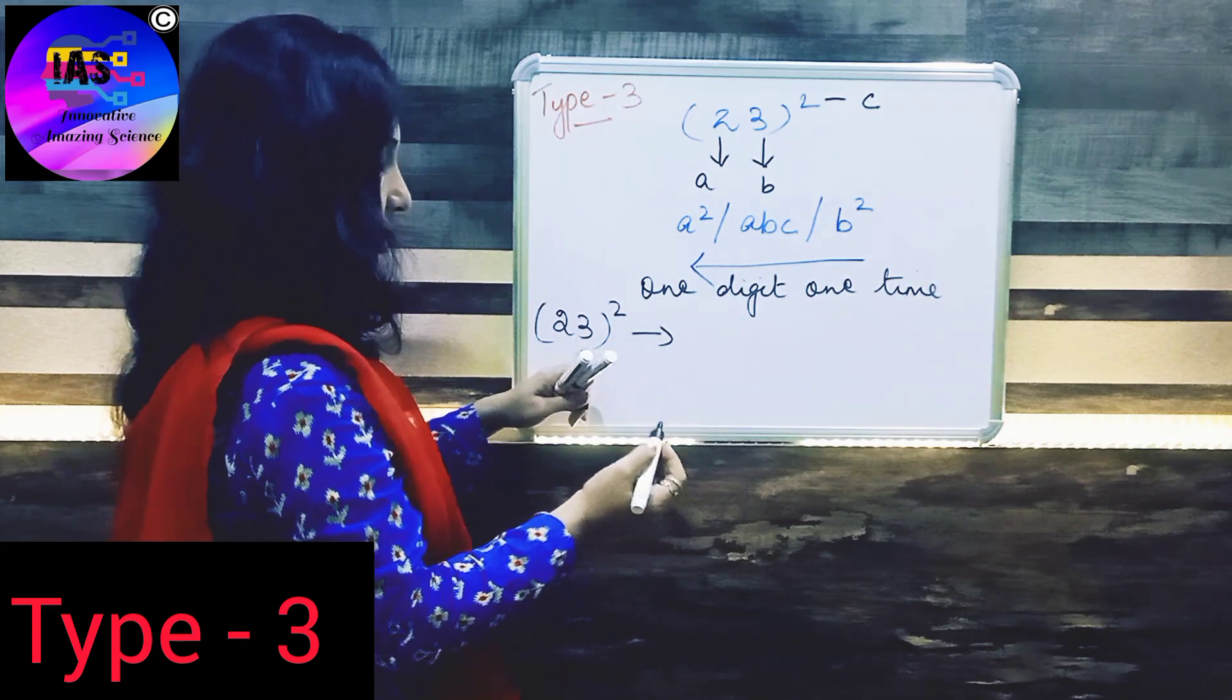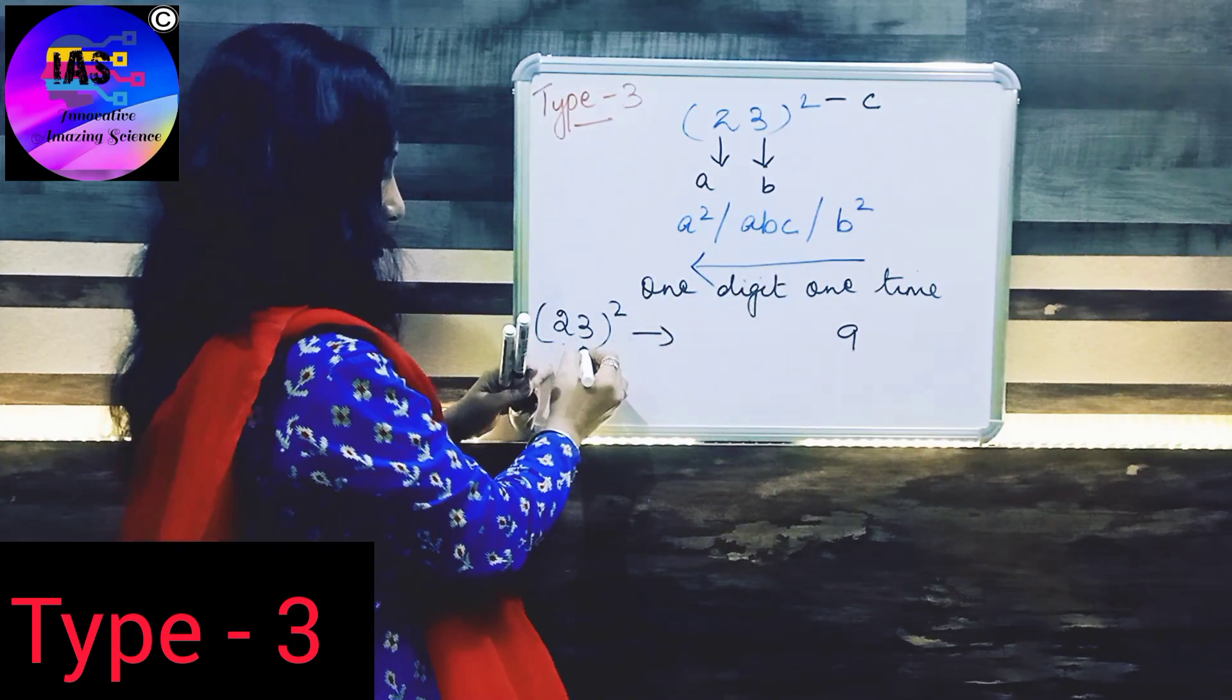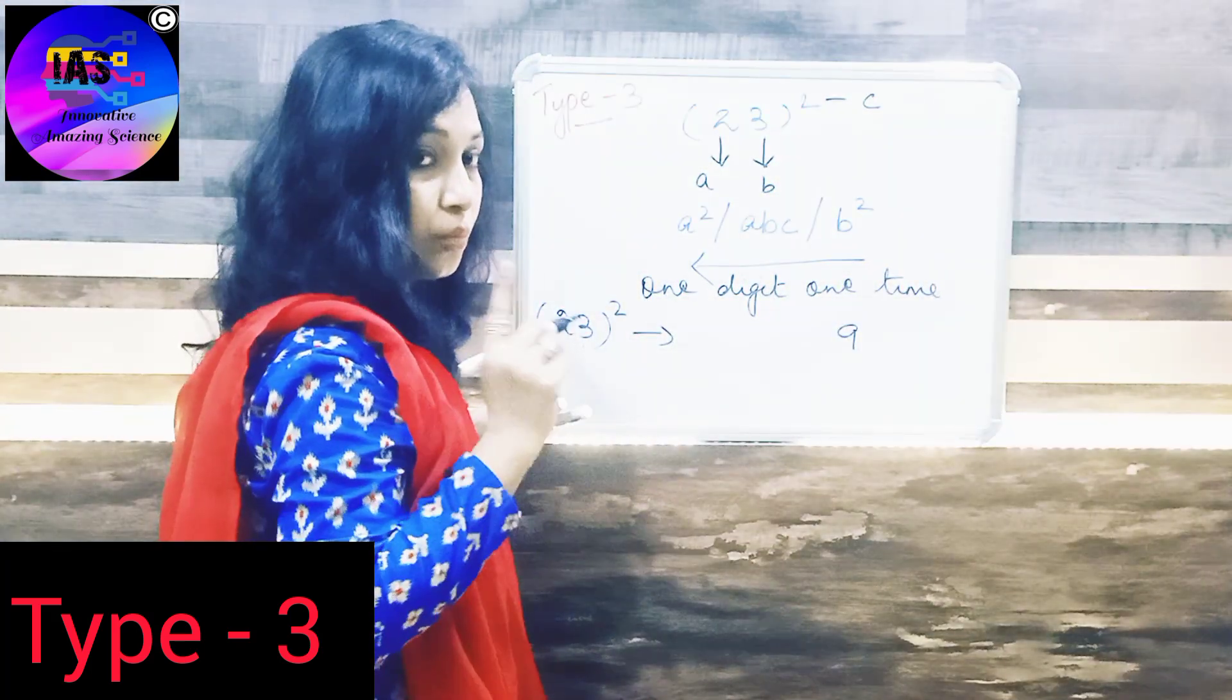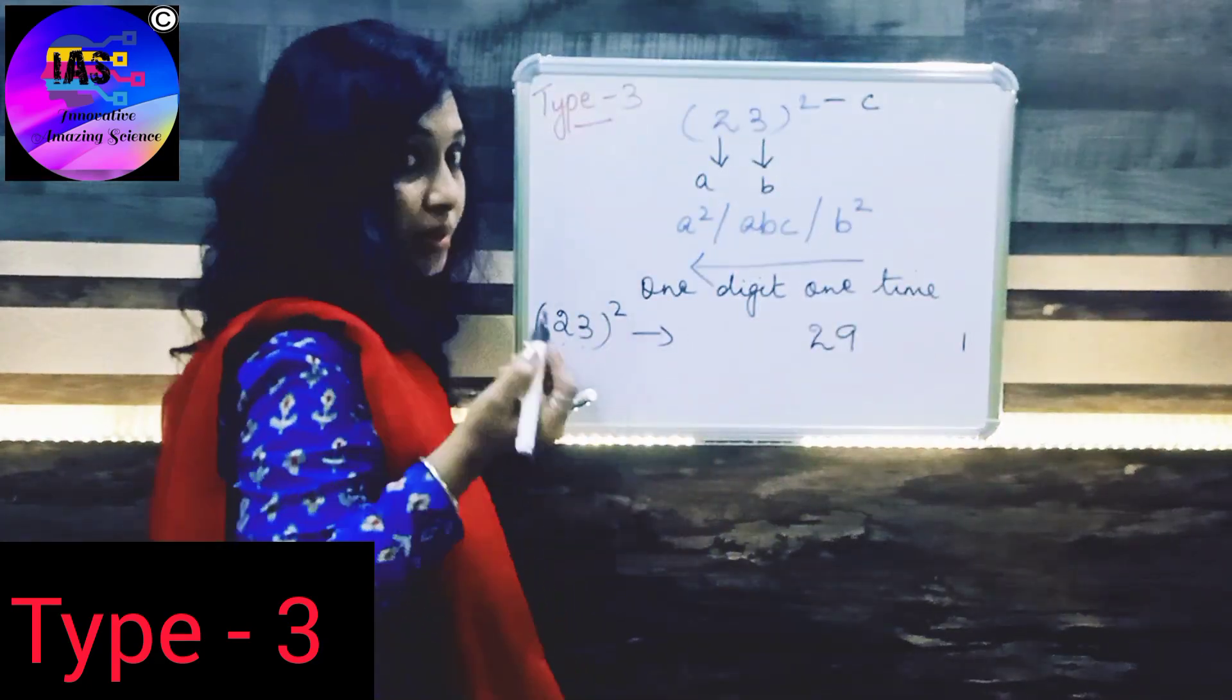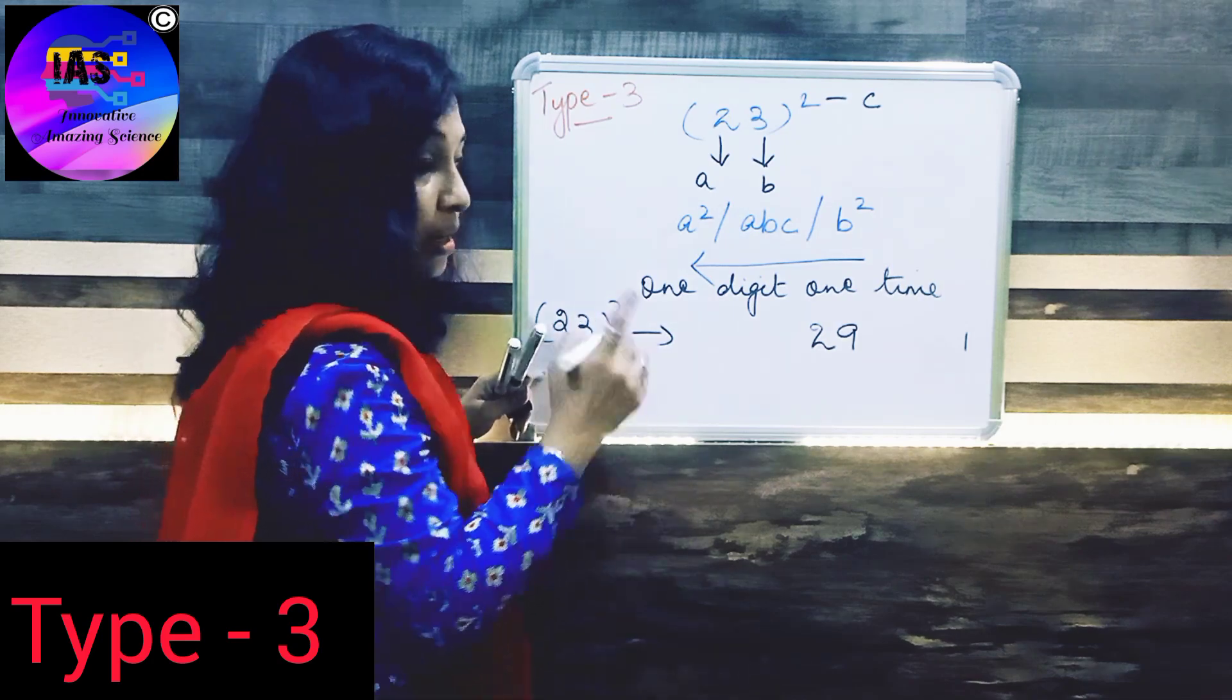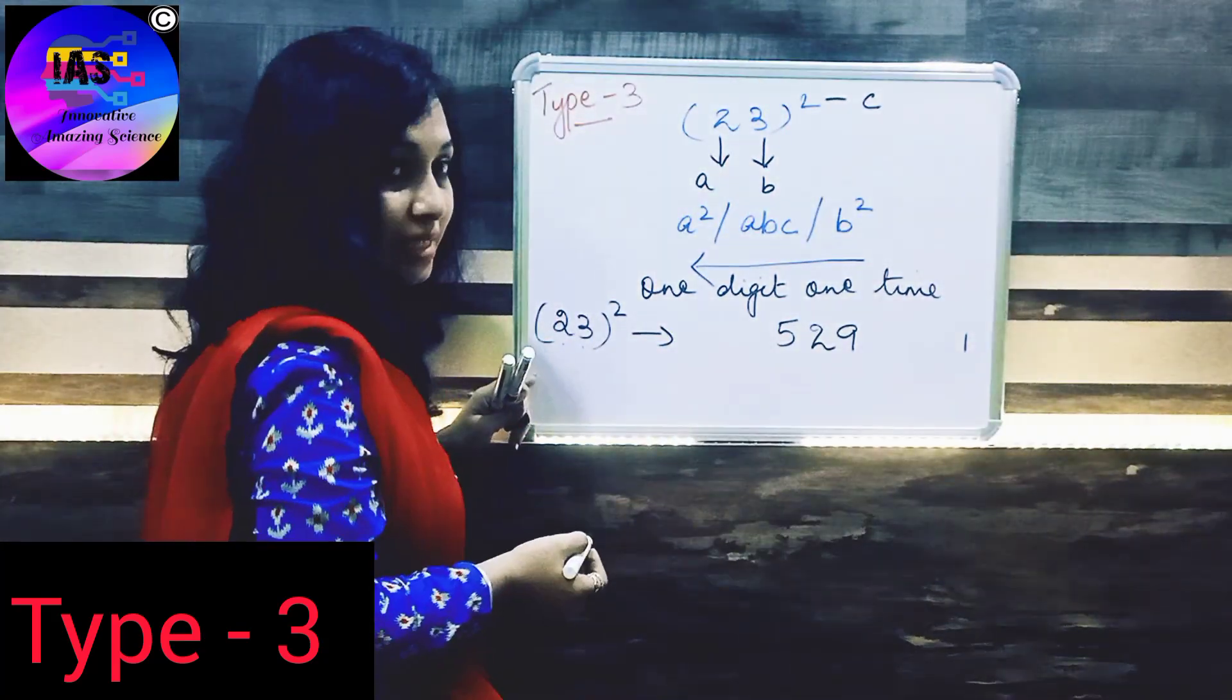This example is 23 square. Our B is 3 over here, so B square is 9. Next is ABC. This is your A, B, and C. When we multiply 2 into 3 into 2, it becomes 12. We cannot write 12 here, so we are going to write 2 over here and 1 will be carry, or you can keep it in mind. And then the last formula says A square. So A square is 2 square. 2 square is 4, carry 1, that becomes 5. So 529 is the answer. 23 square is 529.